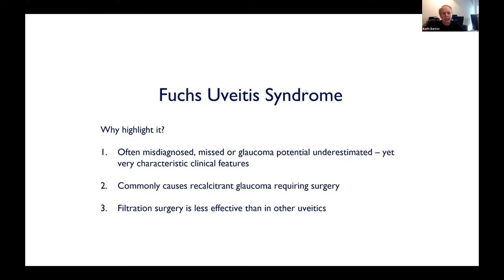Fuchs was typically badly diagnosed in the past, and it's important because it does not require aggressive steroid therapy — aggressive steroid therapy can just put the pressure up. You have to differentiate it from patients who do need aggressive steroid therapy. It's often misdiagnosed, missed, or the glaucoma potential is underestimated. A typical Fuchs patient gets a lot of floaters.